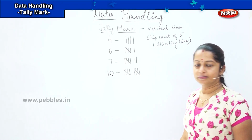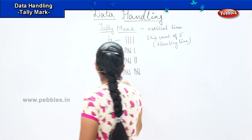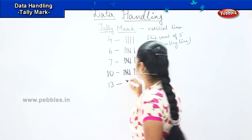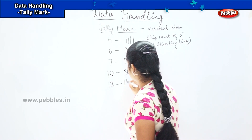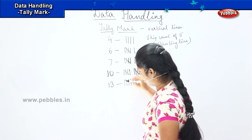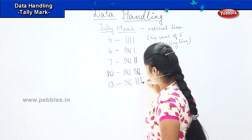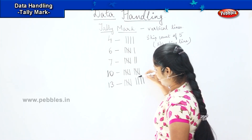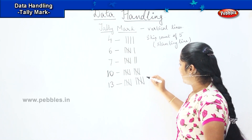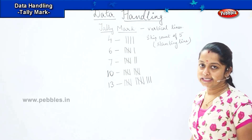Is it clear children? Now if I want to draw 13, how will I draw? Can you help me in drawing it? 1, 2, 3, 4, then slanting line 5, 6, 7, 8, 9, 10, again a slanting line 11, 12 and 13. Is it clear?